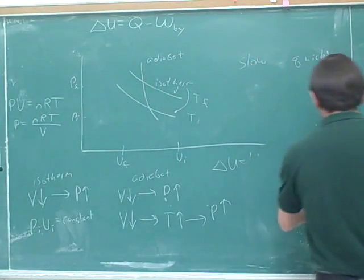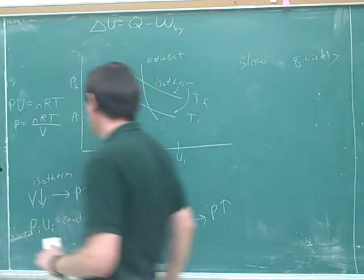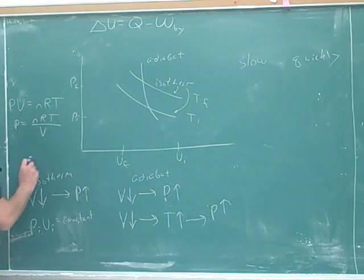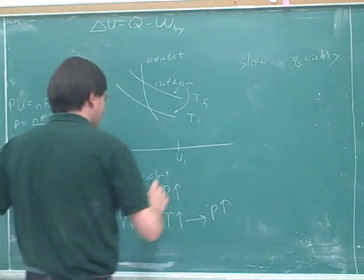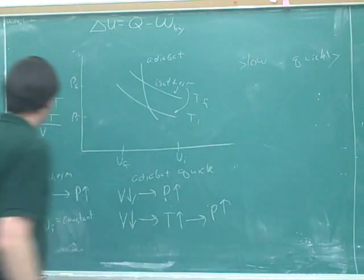A slow process would be isothermal and a quick one would be adiabatic. That is correct. Can you give an argument for either of those?